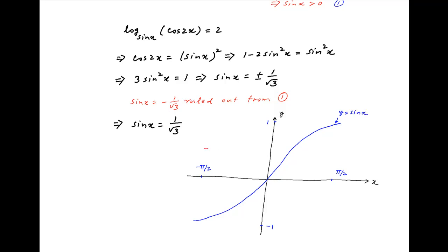The solution of the equation sin x equals 1 upon root 3 is obtained from the point of intersection of the curve y equals sin x and the line y equals 1 upon root 3. Clearly there is only one point of intersection, because the curve y equals sin x is monotonically increasing in the interval minus π/2 to π/2.